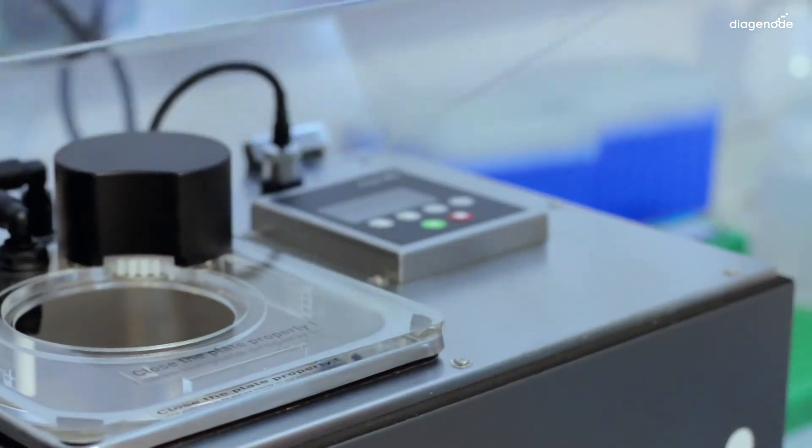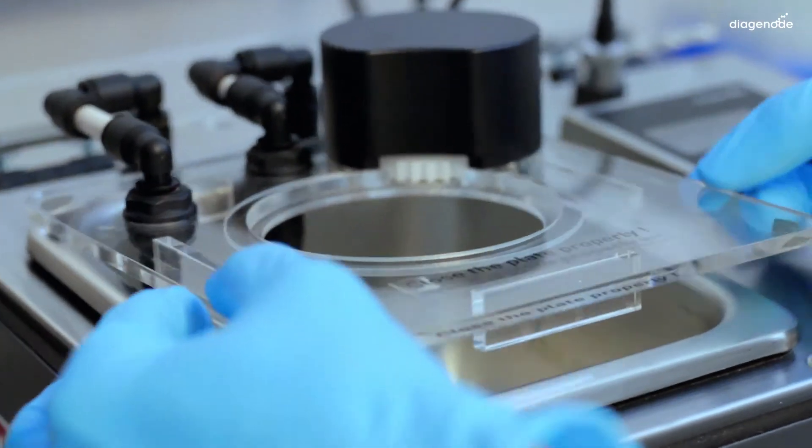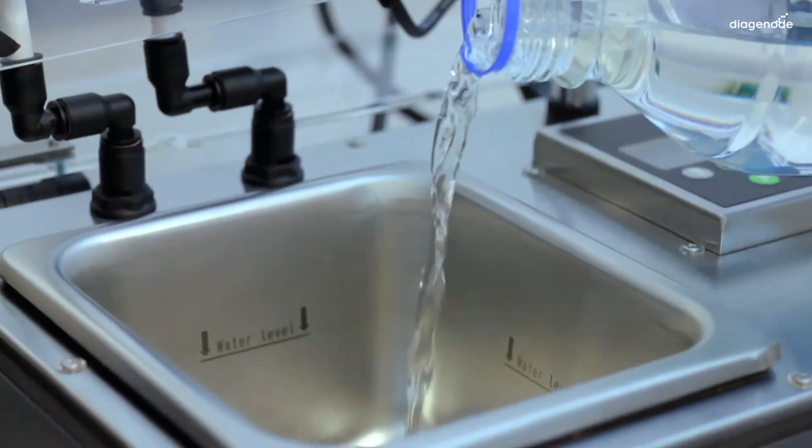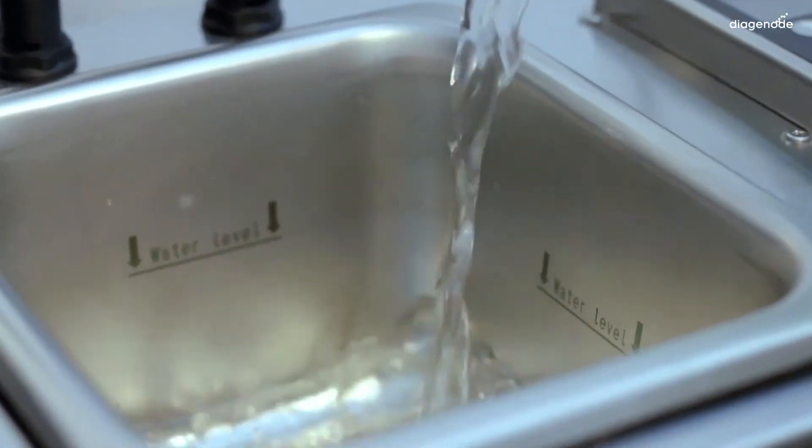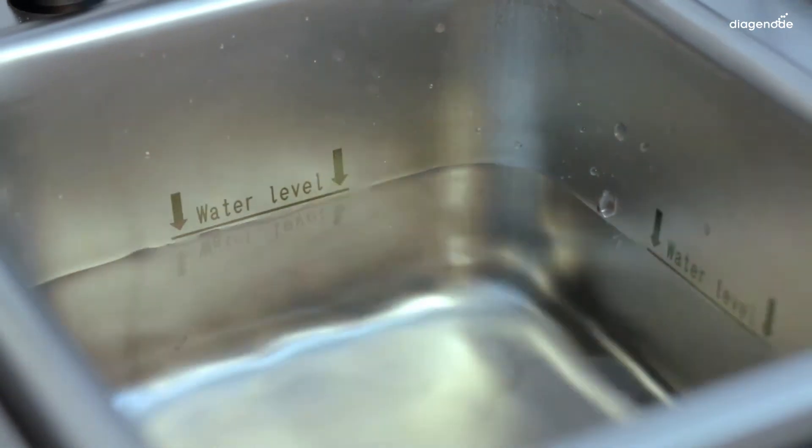If you put too much, the extra water will be drained automatically. To see how to do the draining manually, check the good practices video. Then fill the sonication bath with about 700 ml of distilled water until the level reaches the line.